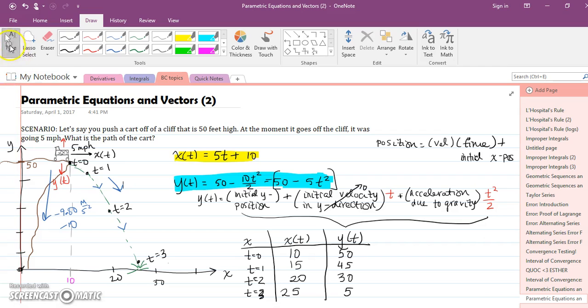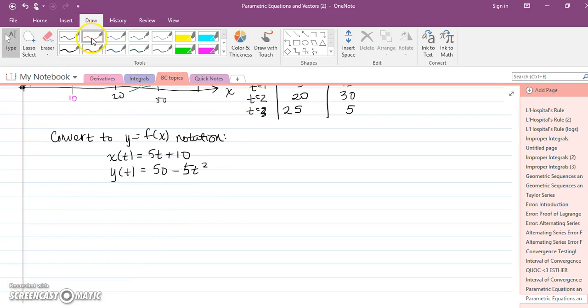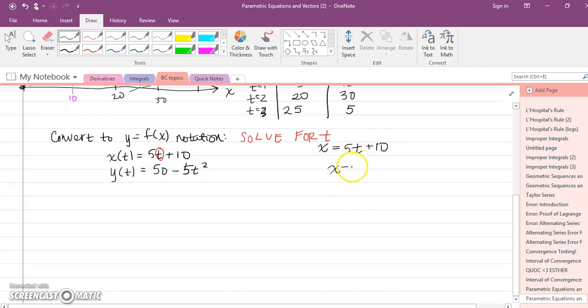Now let me show you how to go back to y equals f of x notation. So here I split up the overall position into x and y. I wrote parametric equations. Let's eliminate the parameter T and write it in normal function notation. So the way that works is you need to pick one of the equations to solve for T. You should always pick the one where it's easier to get T alone. In this case, it's going to be way easier to get T alone in x. So I'm going to get rid of x of T and just put x. Let's go ahead and solve for T.